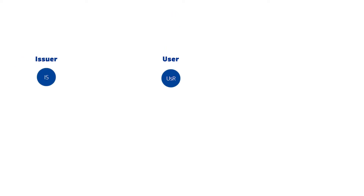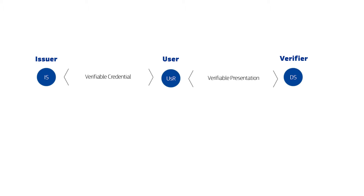Unlike the first pattern, any verifier checking the authenticity of a digital document — the verifiable presentation — can rely on cryptographic verifications without needing to contact its issuer. Furthermore, it's typically up to the holder of the document to share it with the verifier. This means that the holder controls the information that it wants to share with others.